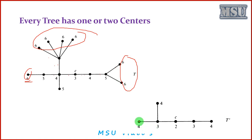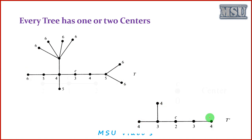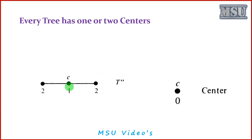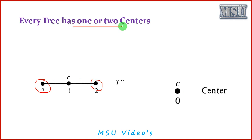Now consider the eccentricity values of the remaining vertices. For the first vertex it is four, for the next it is four, and for another it is also four. From this reduced graph, we again remove all the pendant vertices — these three vertices are removed. After removing them, we get a smaller graph. For this vertex the eccentricity value is two, for the next it is one. Removing the remaining pendant vertex, we are left with only a single center. So we can say that every tree has at least one or two centers.